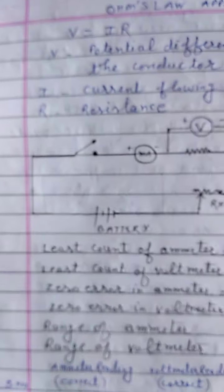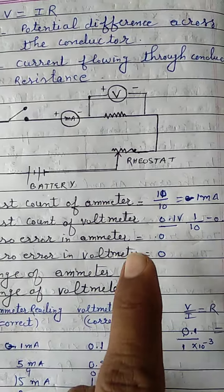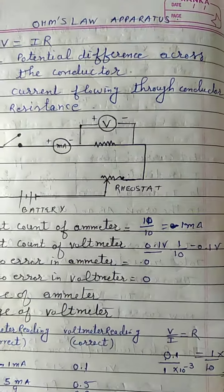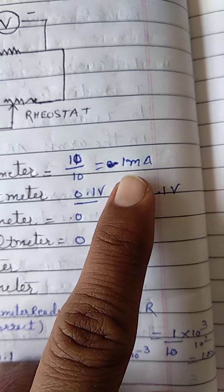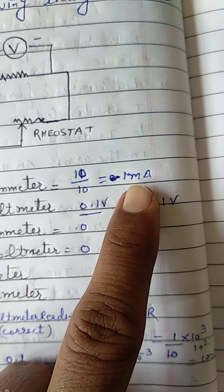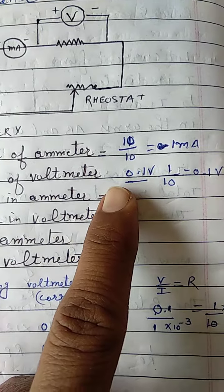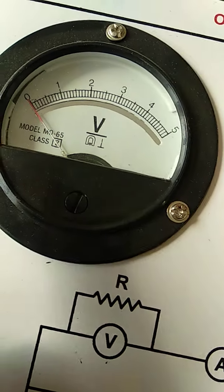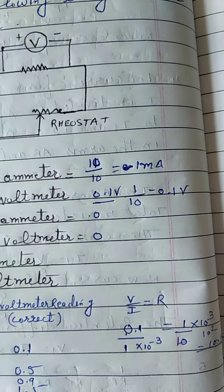So now if we want to calculate the least count of this ammeter, you can just observe it here 10. One part is equal to 10 by 10. So you can see here it is exactly equal to 1 milliampere. Similarly in voltmeter least count of a voltmeter, as it has 0 to 1, so 1 over 10. So what is least count? It can measure 0.1 volt. Is it clear?